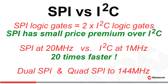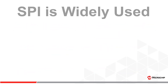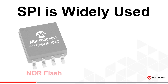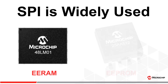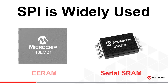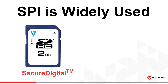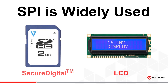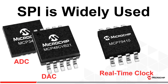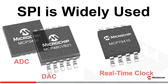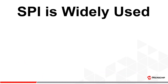Higher-density SPI memories may even offer dual and/or quad SPI to increase the throughput speed up to 144 MHz. SPI devices are found in standalone memory devices like NOR Flash, Serial EEPROMs, EERAMs, and SRAM devices, as well as secure digital memory cards, liquid crystal displays, A-to-D and D-to-A converters, and real-time clocks. This makes SPI a common and widely used serial bus across many applications.